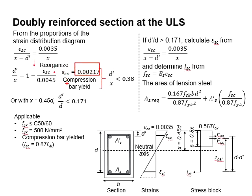The value is substituted into the equations. You will obtain d prime per x equals to 0.38. This sets the boundary that defines whether the compression steel bar has yielded or not at the ultimate limit state. If d prime per x is less than 0.38, we will know that the compression steel bar has yielded at the ultimate limit state.